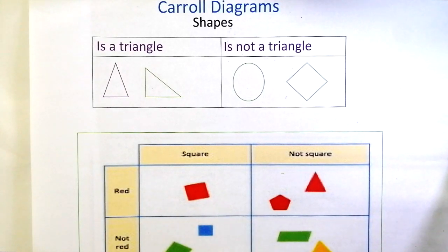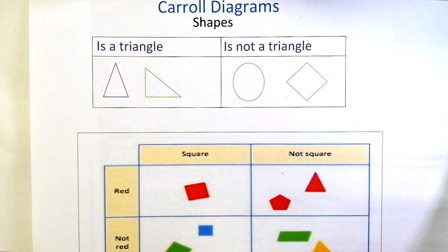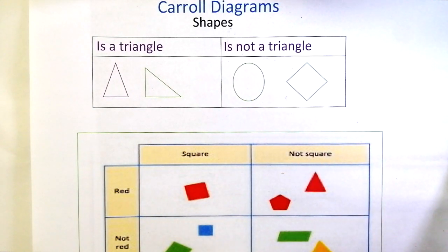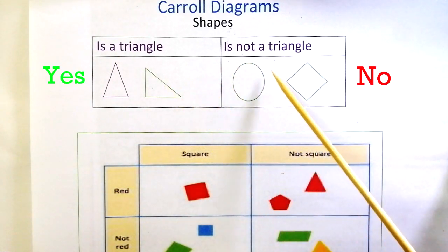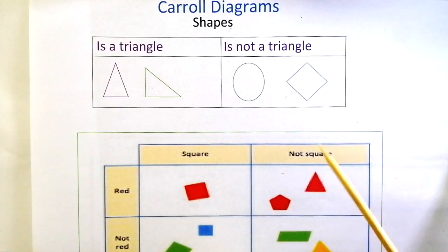Hello students! Let's learn about Carroll Diagrams in this video. This diagram is named after a very smart mathematician Lewis Carroll, who is also the author of the book Alice in Wonderland. Here we use rectangular tables to display the data in a yes or no way. We sort the data using Carroll diagrams by two different categories using the yes or no situation, so you can say that we use it for cross classification.